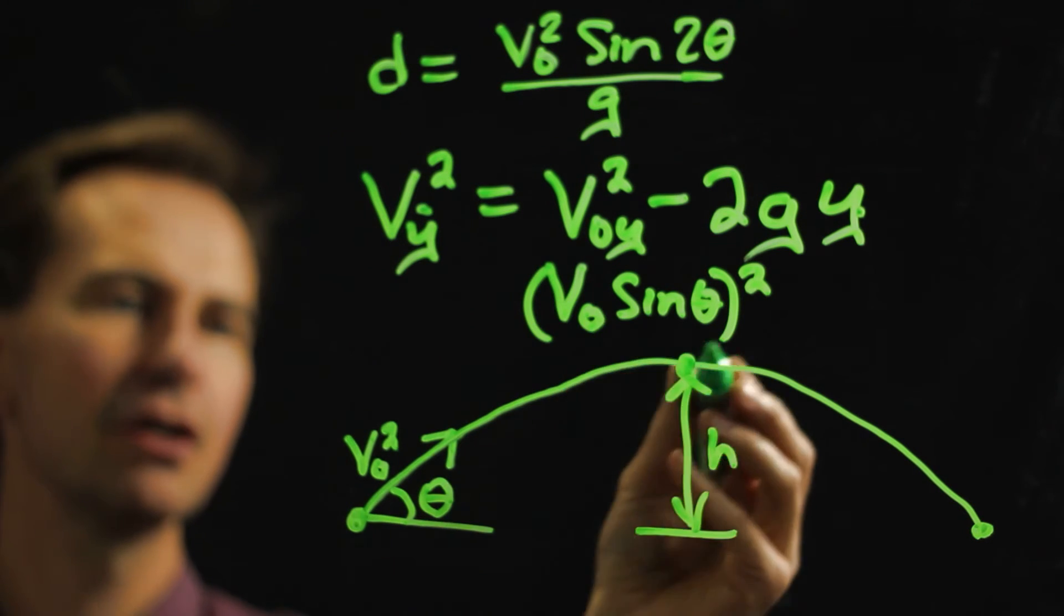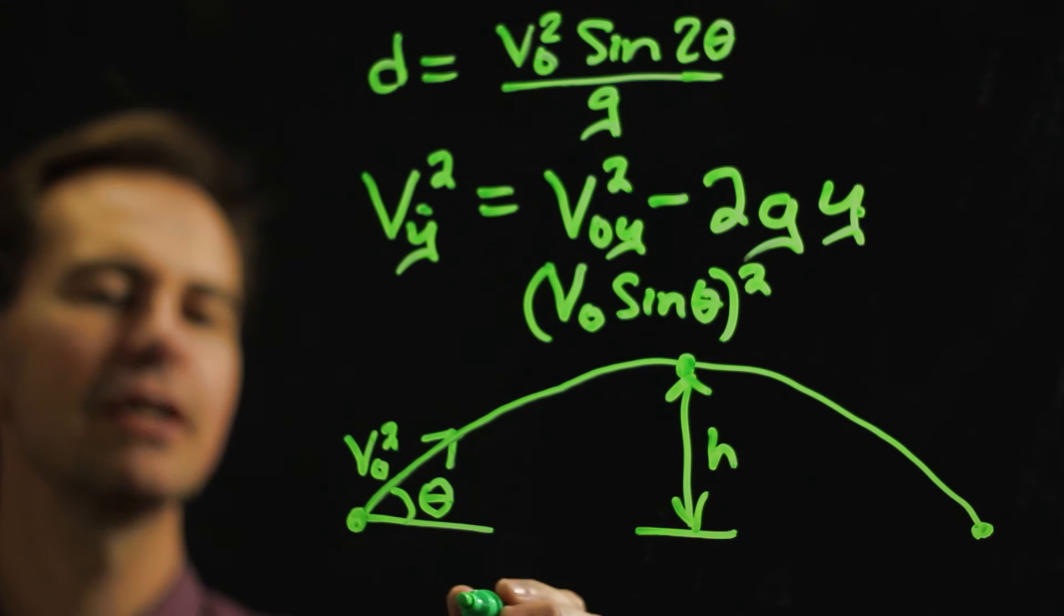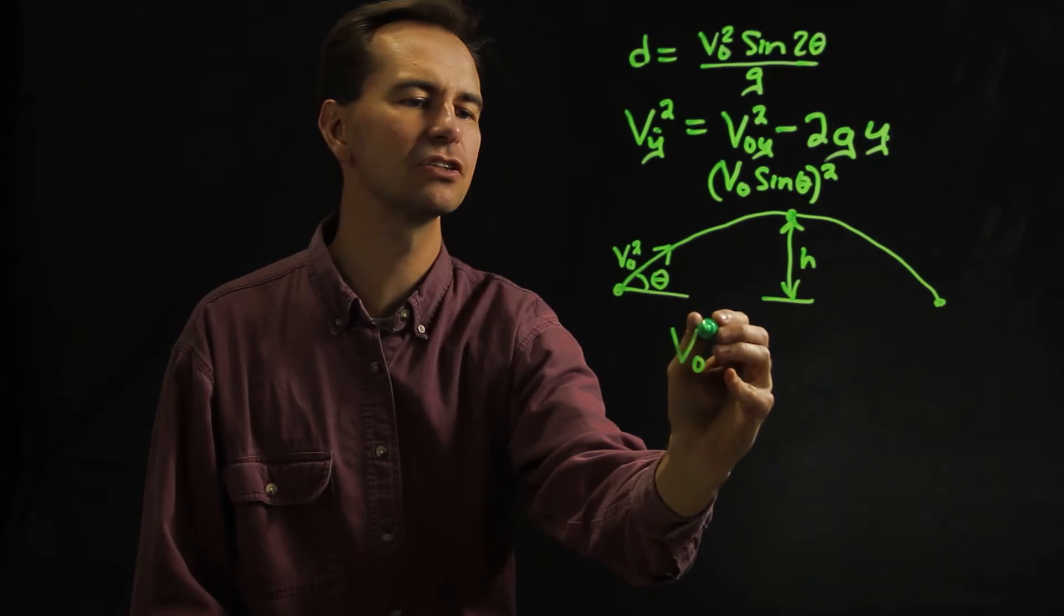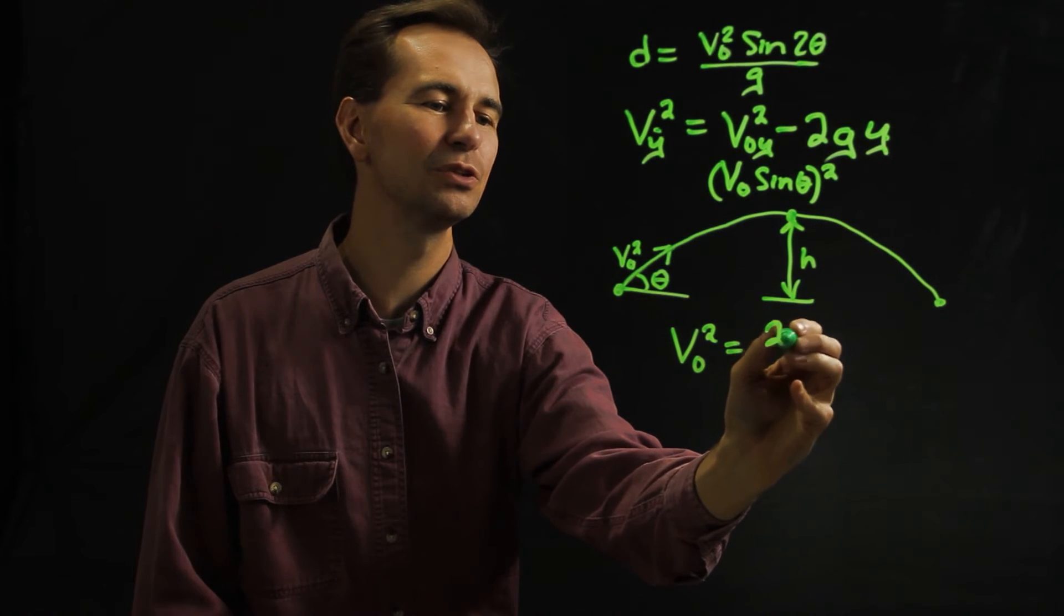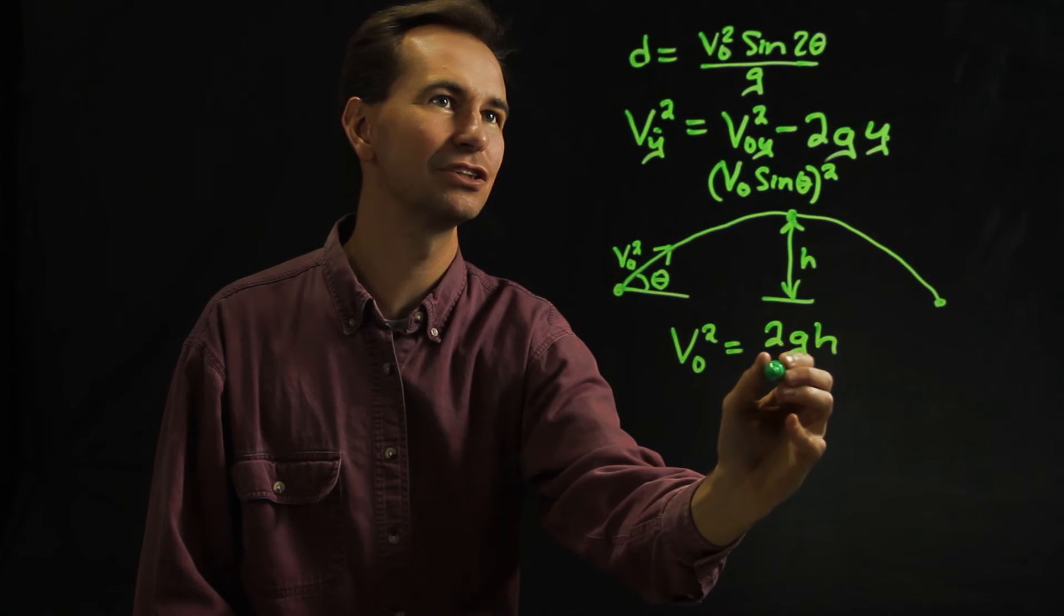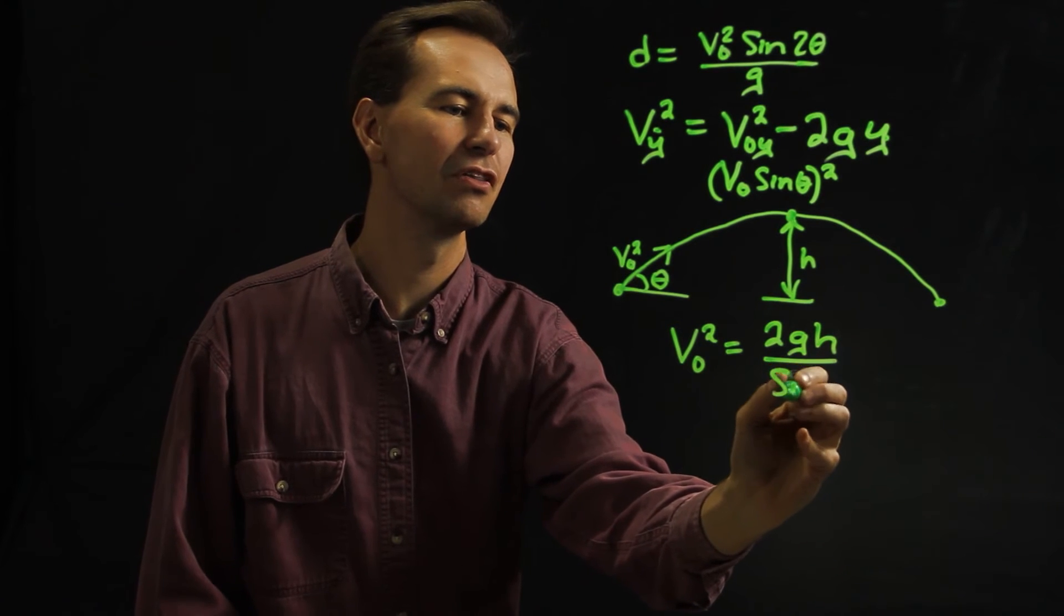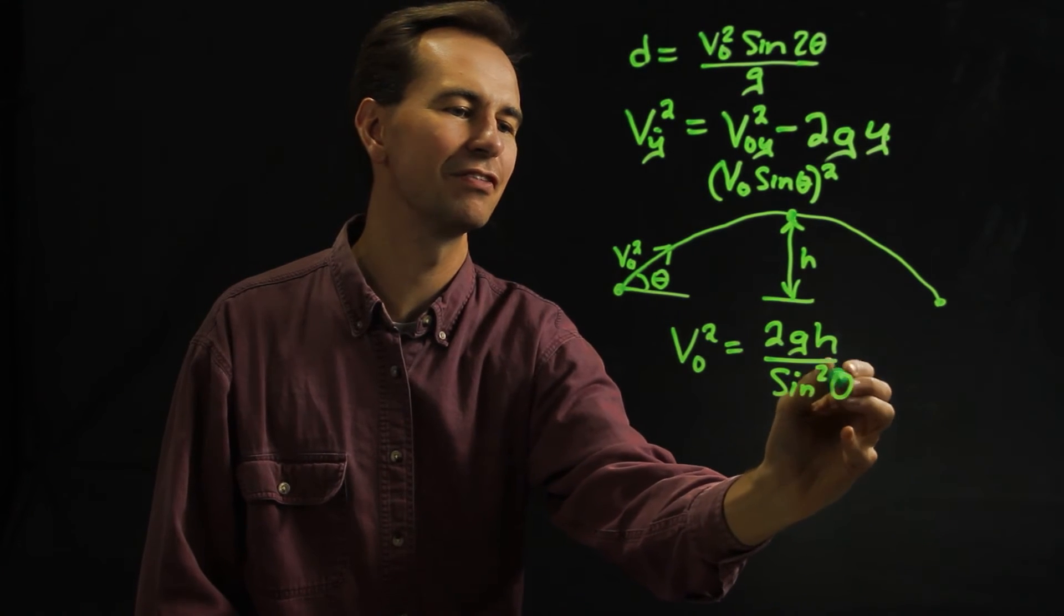Zero in right there, rearrange things a little bit and we would get that v naught squared equals 2gh over the sine squared of theta.